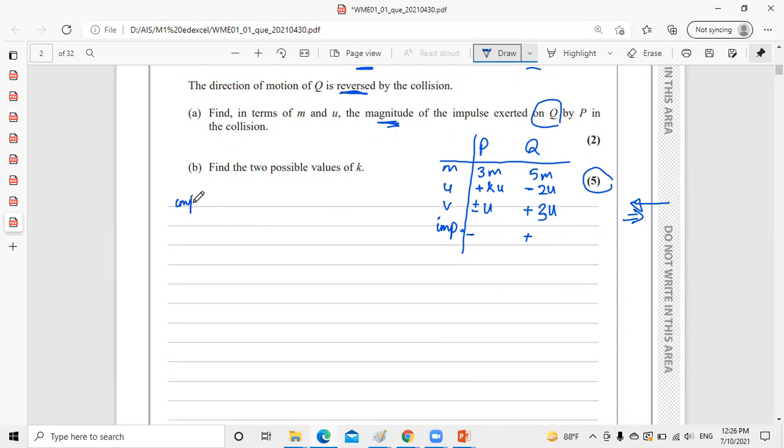We know that impulse equals force times time, but I don't have force or time. So I'll use the formula M(V - U) for Q. All this information is for Q because they ask about Q. Let's put the values. The mass is 5M times (V - U), which is 3U minus negative 2U. Negative 2U becomes plus, so 3 and 2 gives 5. 5U times 5M equals 25MU. This is the impulse on Q.